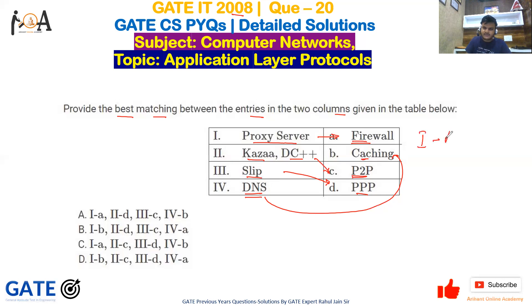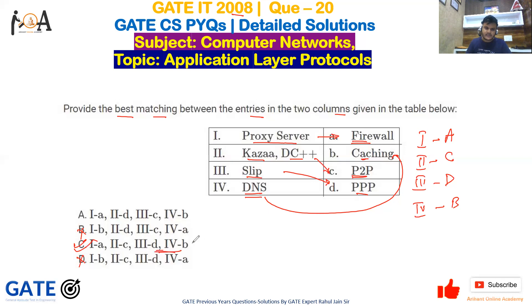So to summarize the matching: the first option matches with A, the second matches with C, the third matches with D, and the fourth matches with B. Checking the answer options, option C is the correct answer for this GATE question.